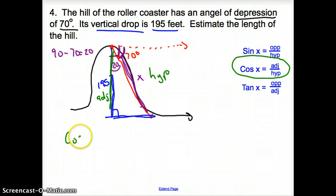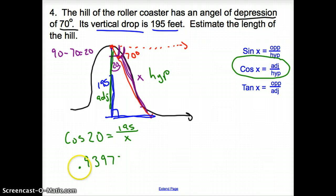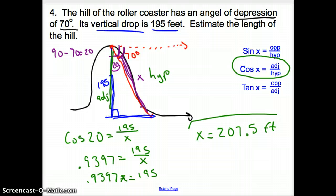So we use cosine of 20 degrees. Cosine of 20, that equals the adjacent, which is 195, that goes over the hypotenuse. Then let's go ahead and punch this in because we have a degree measure. So we do not need to use inverse cosine. It's just punch it right in. So cosine of 20 degrees is 0.9397. That equals 195 over x. We cross multiply to find that 0.9397 x equals 195 divide by 0.9397. And so we come up with x equaling 207 feet and 6 inches or 207 and a half feet for the length of our hill.